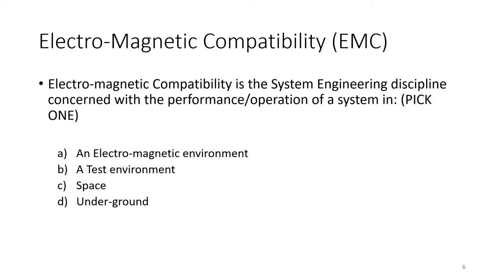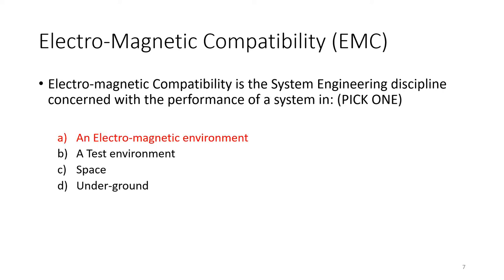Question number one: electromagnetic compatibility is a system engineering discipline concerned with the performance and operation of a system in what? Pick one answer. If you picked A, electromagnetic environment, you got that correct.